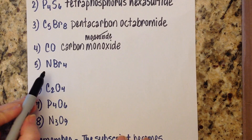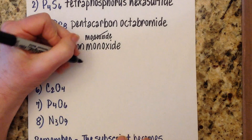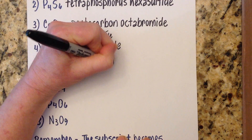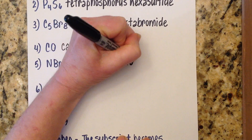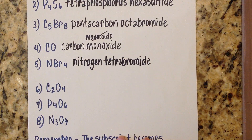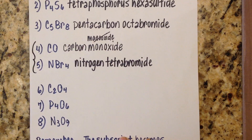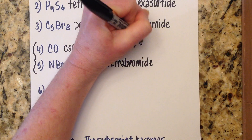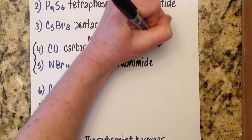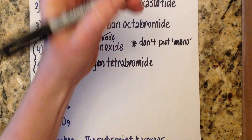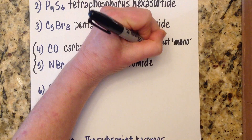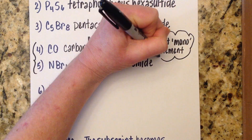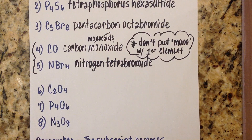Number five: one nitrogen and four bromines. We call that nitrogen tetrabromide. Both of these last examples illustrate the reminder: don't put mono with the first element. This might be a great place to make that note.